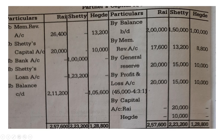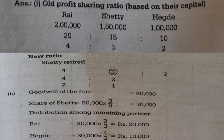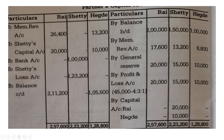Then, general reserves are distributed in the old ratio. The amounts are Rs. 20,000, Rs. 15,000, Rs. 10,000. The profit and loss account balance of Rs. 45,000 is also segregated in the old ratio of 4:3:2 — giving Rs. 20,000, Rs. 15,000, and Rs. 10,000 respectively.